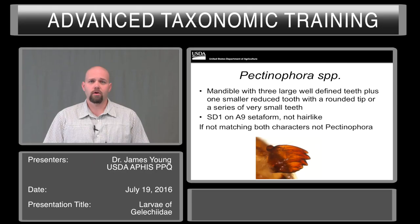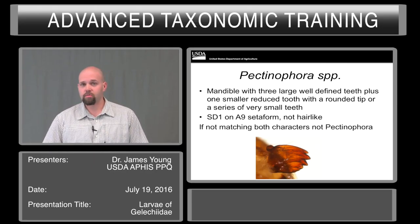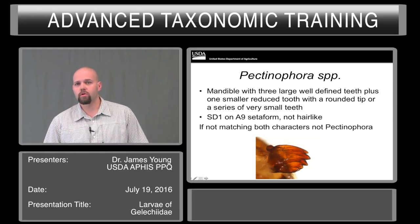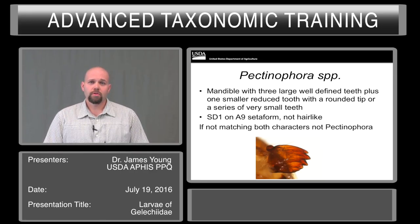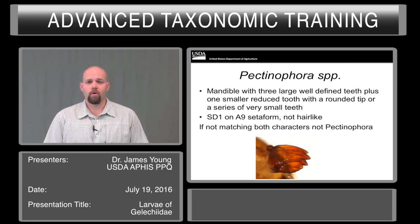The mandible should have three large, well-defined teeth, plus one smaller reduced tooth, as present here. The SD1 seta on A9 should be setiform and not hair-like. If both of these characters do not match, it is most likely not Pectinophora.